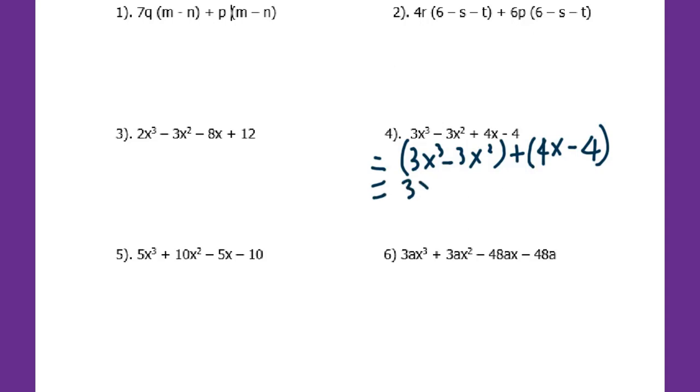The GCF is 3x². Divided by 3x², the 3 is gone, x³ divided by x² gives x. 3x² divided by 3x² is 1, so minus 1. Plus, the second group: 4 is the common factor, I have x minus 1. So x minus 1 will be the common factor. I take x minus 1 outside. This is gone. What's left for each is 3x² plus 4.